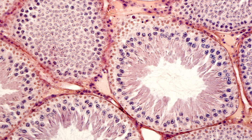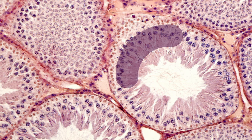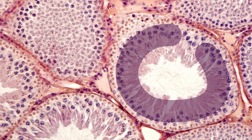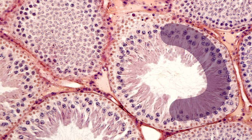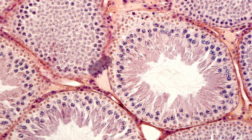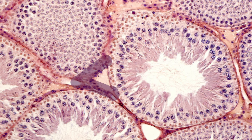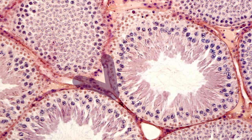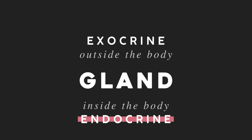You also have endocrine cells alongside other tissues. For instance, the cells responsible for making sperm are in the testes, but so are different cells called Leydig cells that secrete testosterone from the testes into the bloodstream.